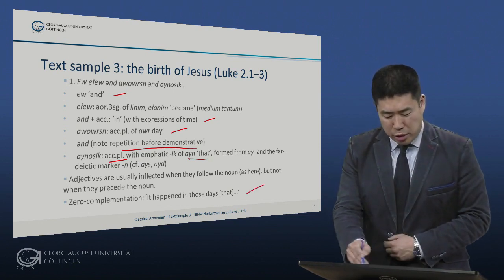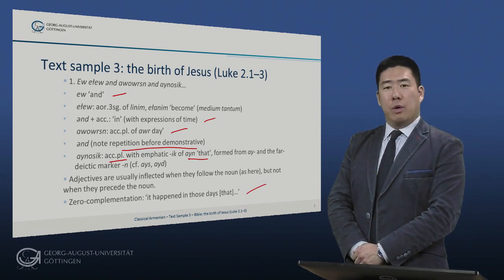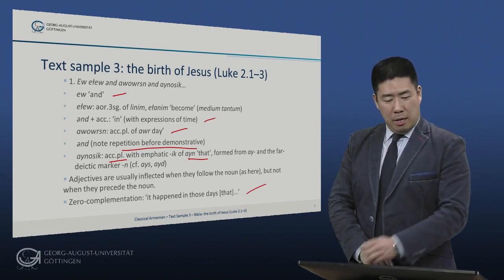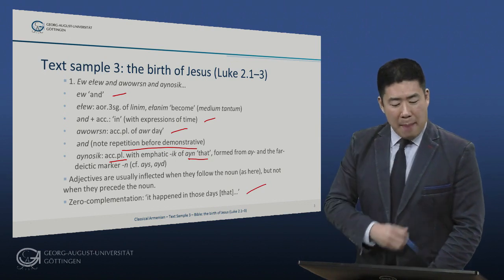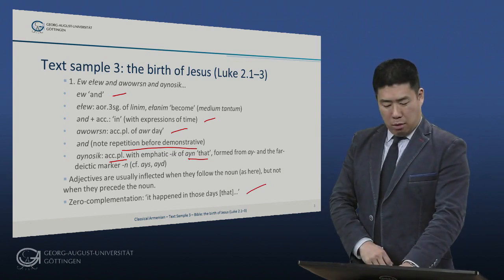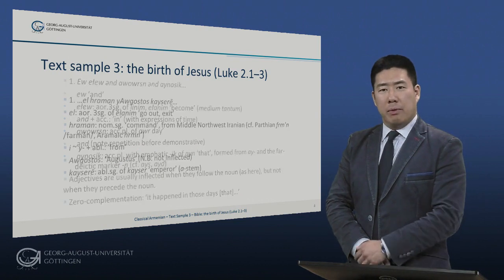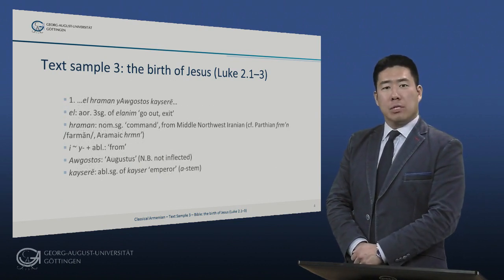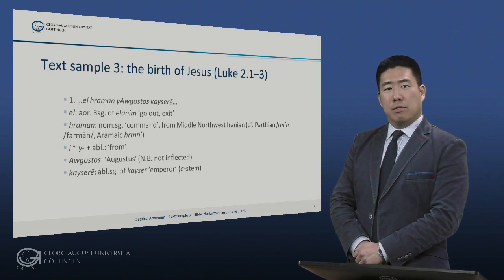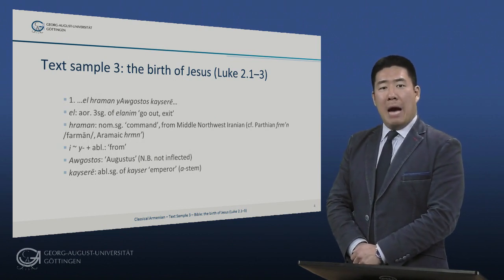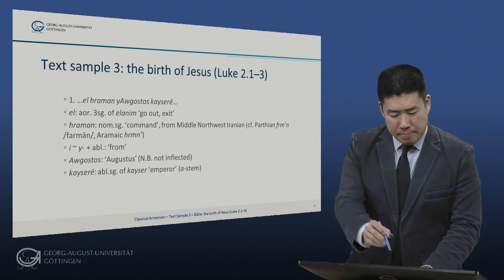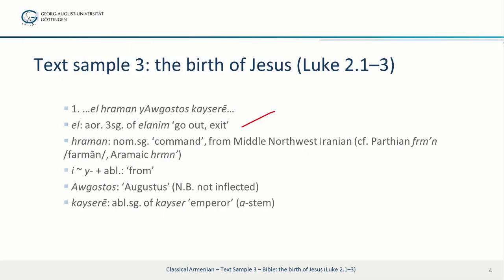We have an example here of zero complementation — there is no equivalent of the English complementizer 'that.' So, literally: it happened, in days, in those, that... that what? El heraman yaugustos caisere. El is accusative third singular of elanim, 'to go out' or 'exit.' We have here a typical example of a strong aorist corresponding to a suffixed present. Heraman, nominative singular, the subject here, means 'command' or 'a decree.'